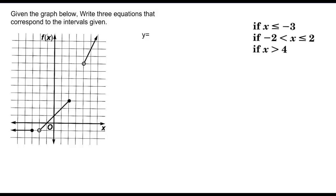Now we transition to writing the equations from graphs rather than graphing them. The first graph exists when x is greater than or equal to negative 3, with a filled dot. The second exists when x is greater than negative 2 (open circle) and less than or equal to 2 (closed circle). The third exists when x is greater than 4. The first graph is a horizontal line at y equals negative 1.